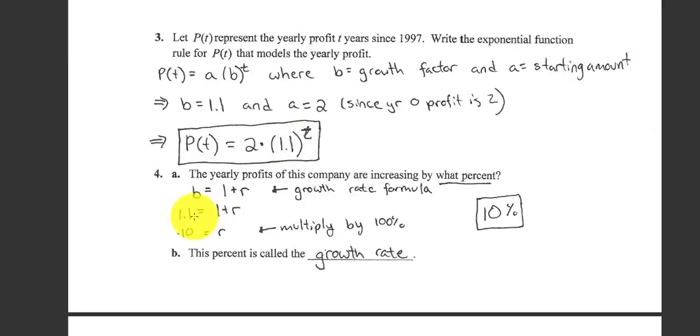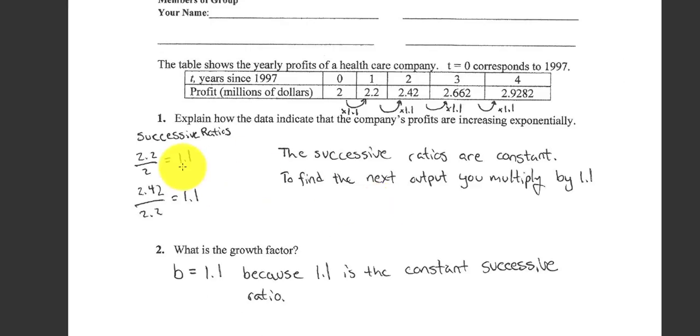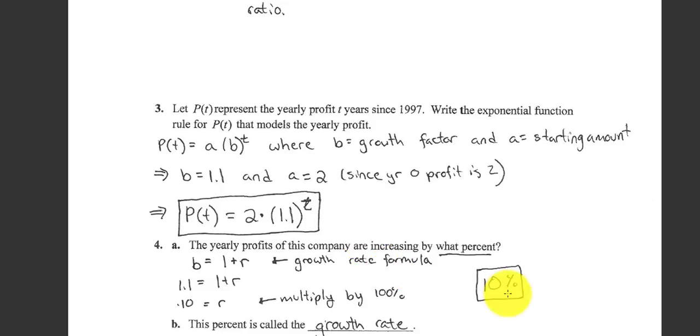So B we know is the 1.1. The R is what we don't know. So if I subtract 1 from both sides, I end up with 0.10 equals R. And as a percent, move the decimal two places to the right, and you have 10 percent. That's called the growth rate. So the profits, they're not growing by 1.1 percent. They're growing by 10 percent.